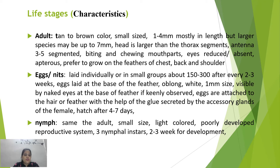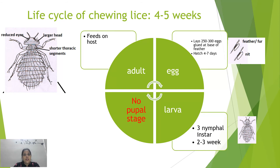Eggs are oblong, white, 1 mm in size, laid at the base of feathers and attached to hair or feathers with glue secreted by the female's accessory glands. Eggs hatch in four to seven days, producing nymphs that are similar to adults but smaller, lighter in color, and with poorly developed reproductive systems. There are three nymphal instars taking two to three weeks to complete metamorphosis. The total life cycle of chewing lice is completed in four to five weeks.